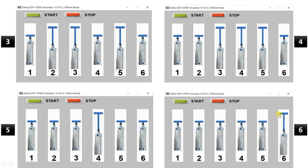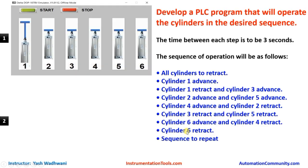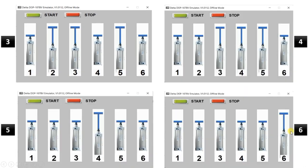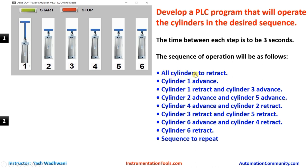Here all six stages are completed. Now what should happen: cylinder six should retract and the sequence should repeat. When cylinder six retracts, all the cylinders will be in the retract position — that is the downward position. It will come to the state where all cylinders are retracted, and from there it will repeat the sequence with cylinder one advancing. These cylinders will advance and retract as per this sequence until we press the stop button.